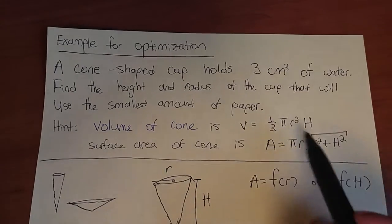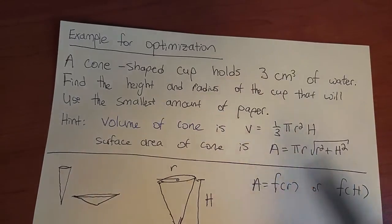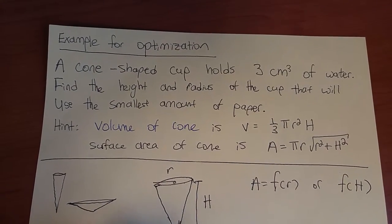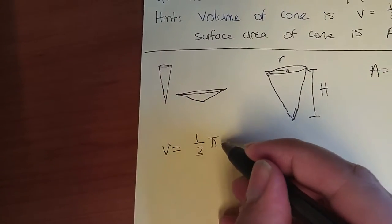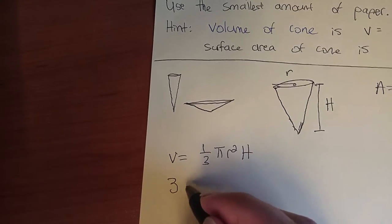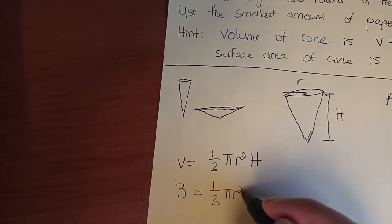The method we're going to use is to use this volume formula. We set them equal to each other. So V = ⅓πr²h, and V equals 3, so 3 = ⅓πr²h.